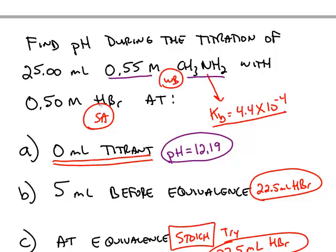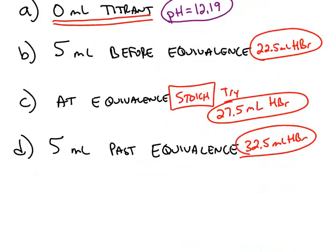When we react the hydrobromic acid, the pH will decrease. Eventually, if we add excess acid, we know that the pH will be definitely acidic.